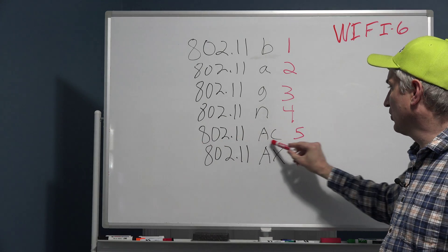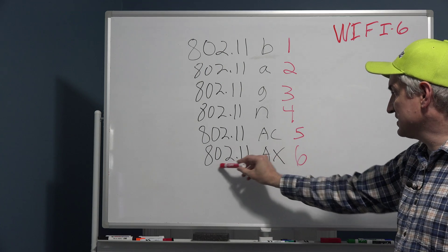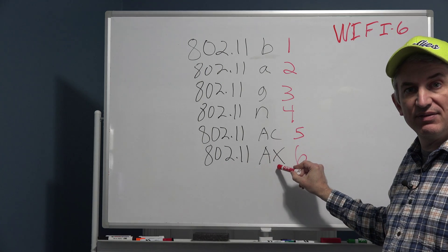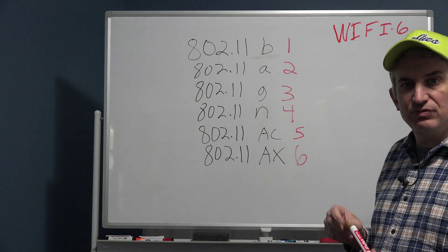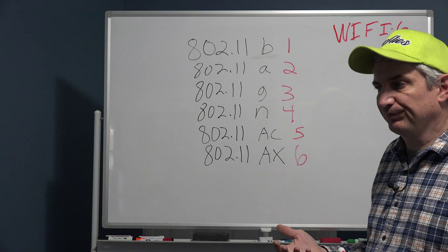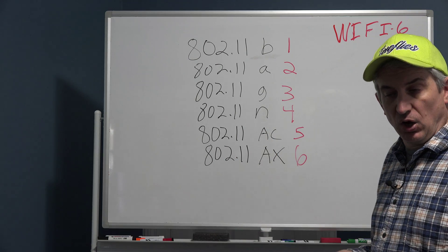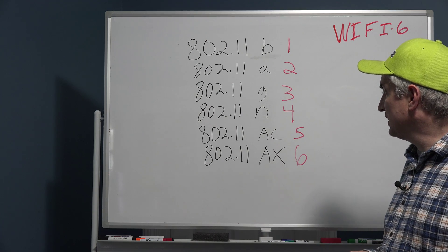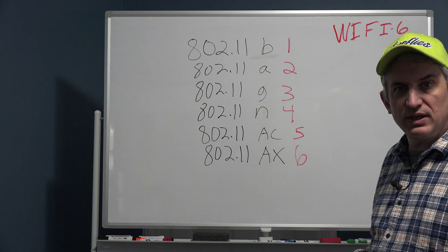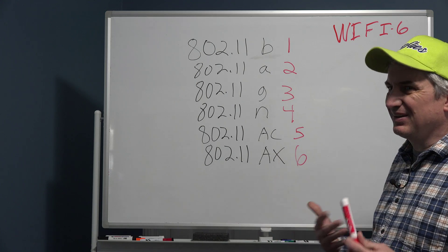Everybody now for the most part is on WiFi 5. There are very few WiFi 6, or in other words 802.11ax devices. Some of your very latest phones like the iPhone 11 or 12 has WiFi 6. The Samsung S20 that I have has WiFi 6. You can get it in a few computers, but really it's not widely adopted yet.